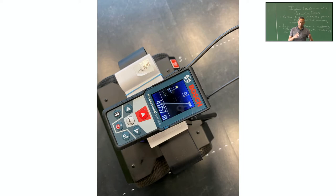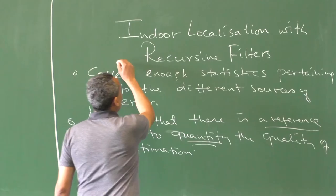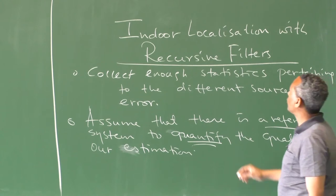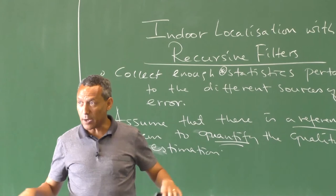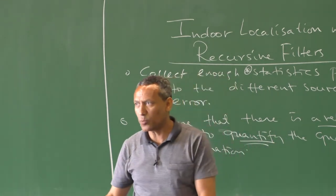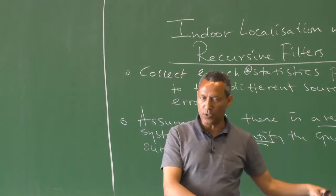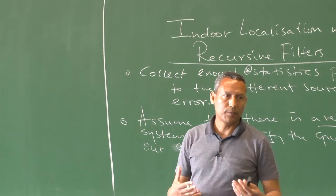We set in place an estimation system and then compare its quality to tune model parameters. The first step in self-localization is to collect enough statistics pertaining to the different sources of error. There are estimation errors belonging to the estimation mechanism we adopt, and estimation errors which are outside of it. We need to understand the significance of these two types of estimation errors.